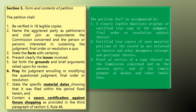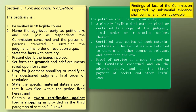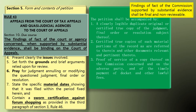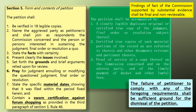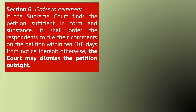Last is the proof of service of a copy on the commission concerned, the adverse party, and proof of timely payment of docket and other lawful fees. Take note that the findings of fact of the commission, if supported by substantial evidence, shall be final and non-reviewable. Relate that to Rule 43, Section 10, which states that findings of fact of quasi-judicial agencies when supported by substantial evidence shall be binding on the Court of Appeals. Failure to comply with any of the foregoing requirements is sufficient ground for dismissal of the petition. Section 6 is about the order to comment.